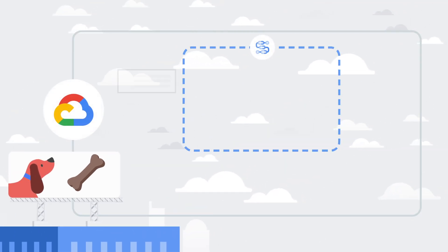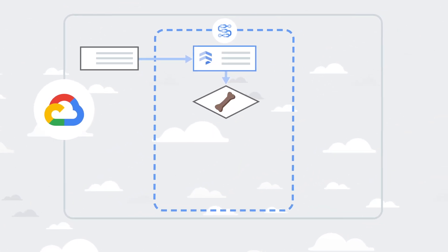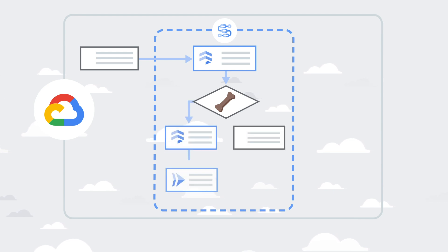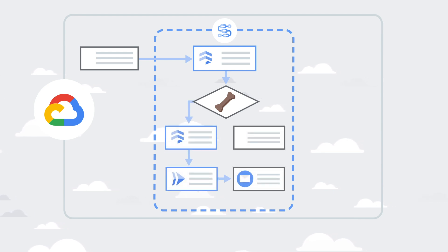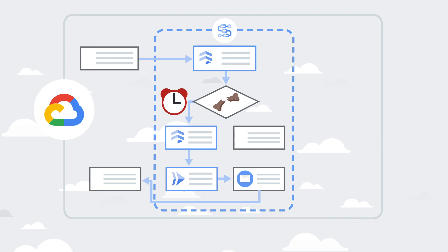A new order kicks off the workflow. First, we check Cloud Firestore to see if we have enough inventory. If we do, we update the inventory in the database. Then a Cloud Run app fulfills the request and calls a third-party email API to send the customer an order confirmation. If there isn't inventory, the workflow can check once per day until the item is back in stock.